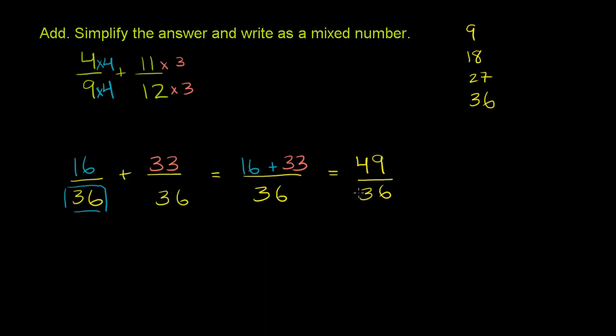Now, can we simplify this? 49 is 7 squared. So it has 1, 7, and 49 as factors. 36 has a bunch of numbers, but it is not divisible by 7. So this is actually in simplest form, but this is an improper fraction. The numerator is larger than the denominator. So let's write it as a proper fraction.